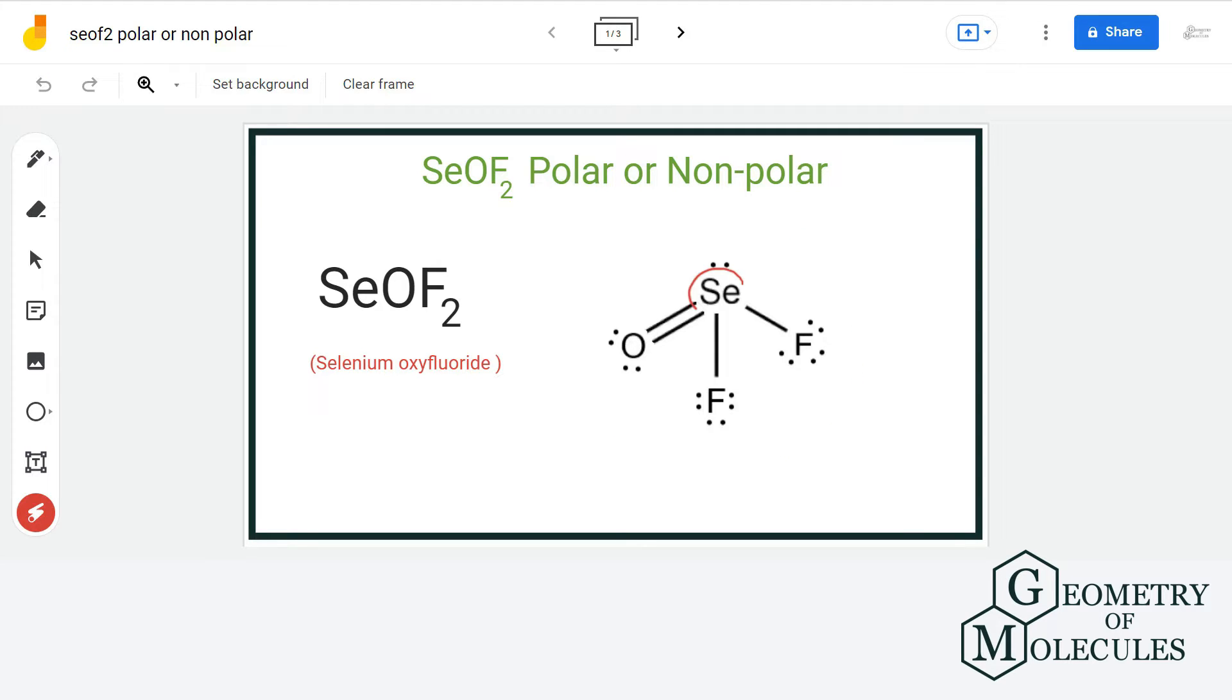selenium atom is forming two single bonds with two fluorine atoms and one double bond with oxygen atom. And besides that, selenium also has a lone pair of electron attached to it.